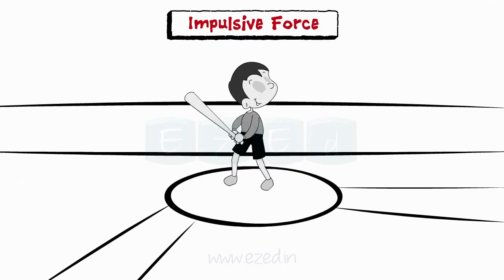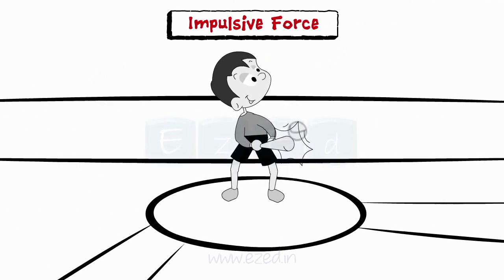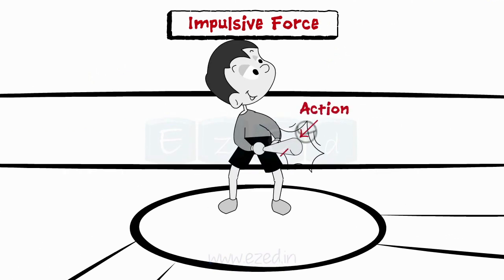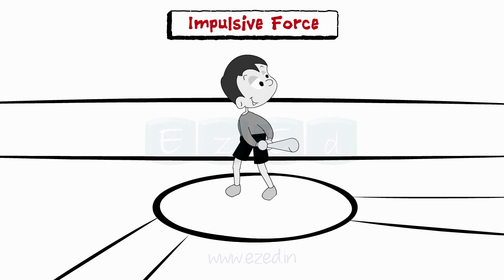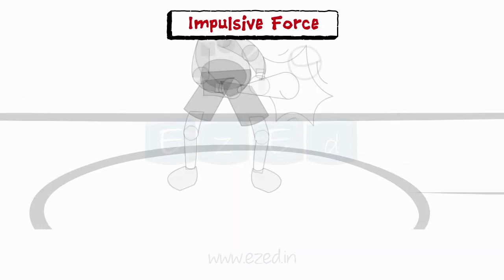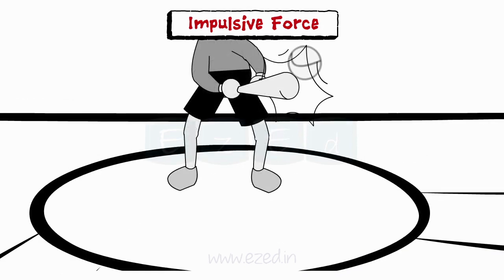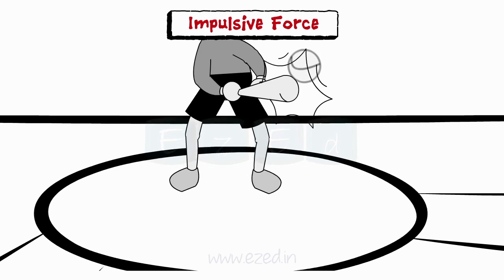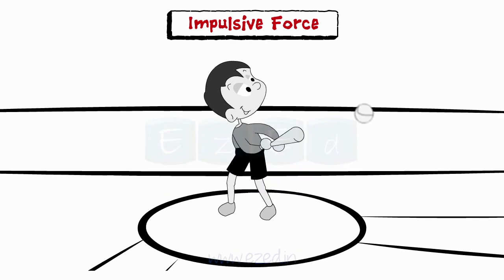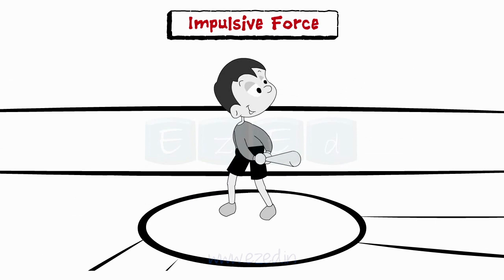Consider a boy playing baseball. When a bat hits a ball, there are two forces — action and reaction force at the point of contact — which are also called impulsive force. Due to this impulsive force, new momentum is gained by the ball. When a large force acts for a very small time, it causes a considerable change in a particle's momentum. This is called an impulsive force.